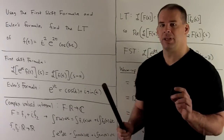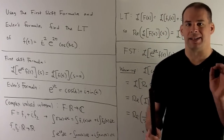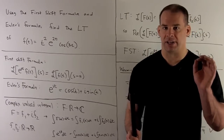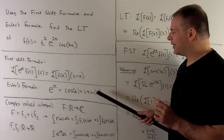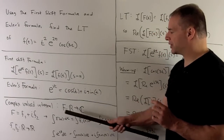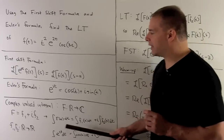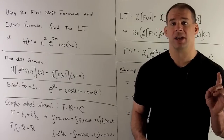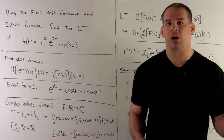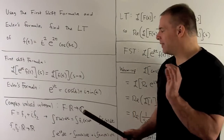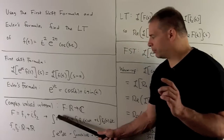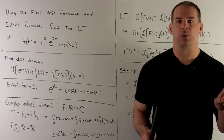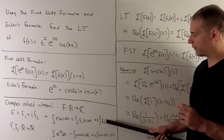Another ingredient we need is the complex-valued integral. The idea is we have a function that takes real numbers and returns complex numbers. We can write capital F = F1 + i·F2, splitting it into real and imaginary parts where F1 and F2 each take a real number and return a real number. Then the integral of F with respect to t is just integrating F1 and F2 separately, then combining them with i in front of the F2 integral.